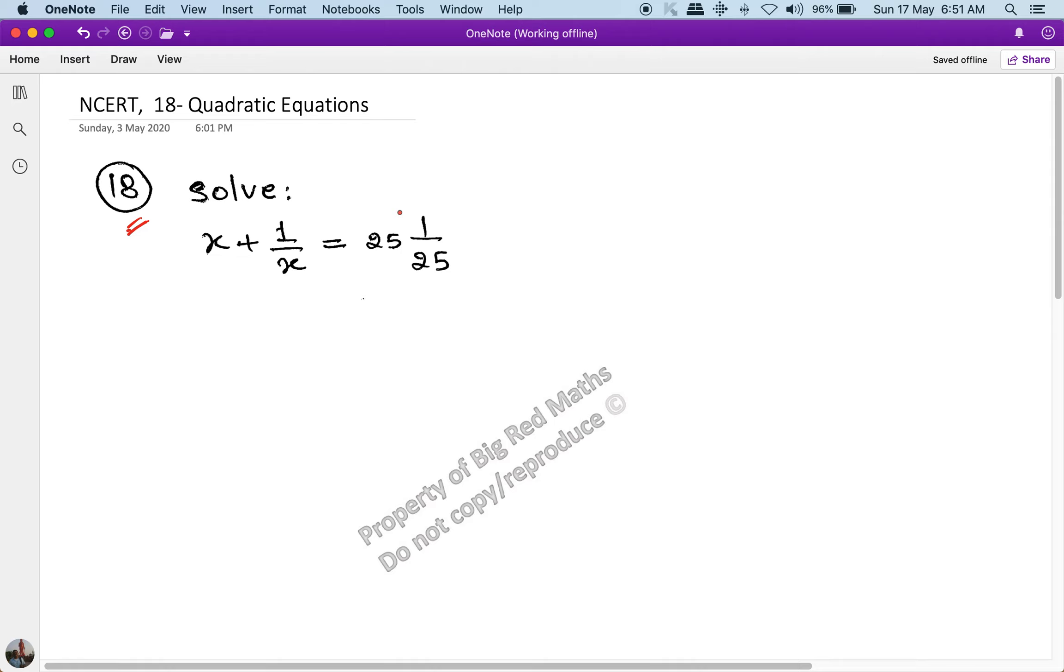First of all, I will show you a very easy approach. This is a root. We can see it as a root. The root is written as x plus 1 by x and this is 25, 1 by 25. We can see it as 25 plus 1 by 25.